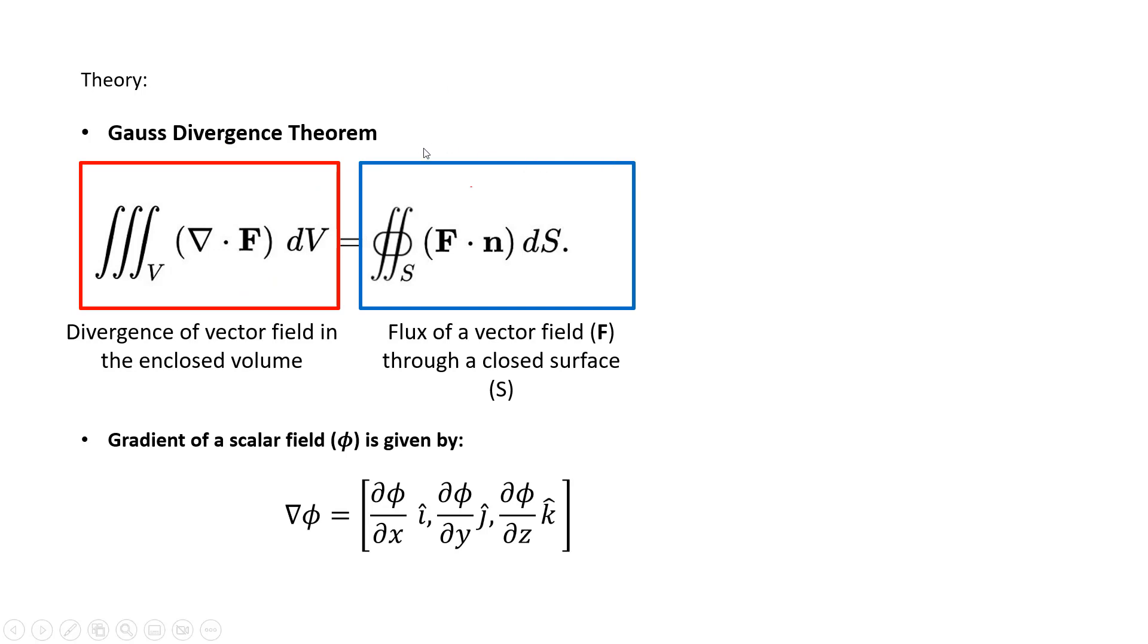Now we need to know the Gauss divergence theorem in order to solve this question. The Gauss divergence theorem simply gives you a relationship between the surface integral of the vector field around a closed surface to the volume integral of the divergence of that vector field.